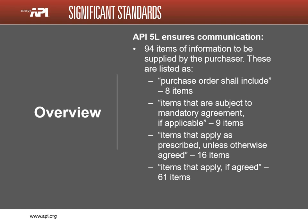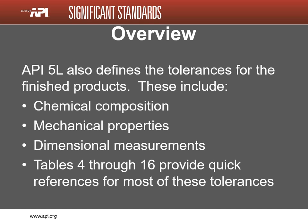API 5L ensures communication between the purchaser and the manufacturer. Paragraph 7 of the document lists 94 items of information that are to be supplied by the purchaser, itemized to make sure that there is clear understanding of the requirements for the product being ordered. Many of the requirements for an order are determined when the description of the product is defined. API 5L defines the tolerances on the finished products including chemical composition, mechanical properties, and dimensional measurements.